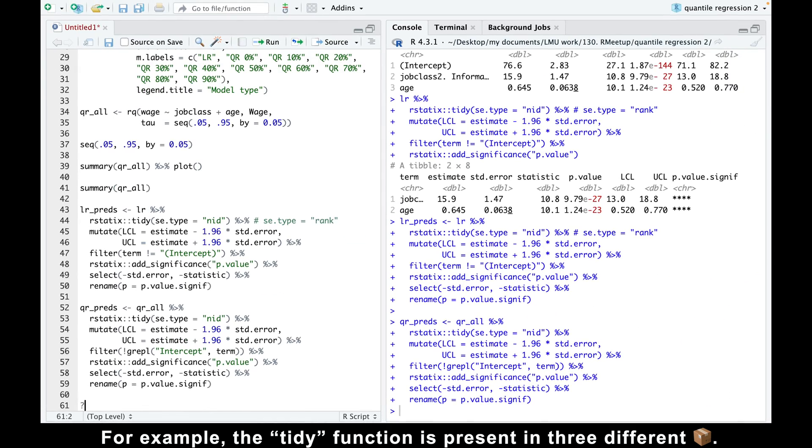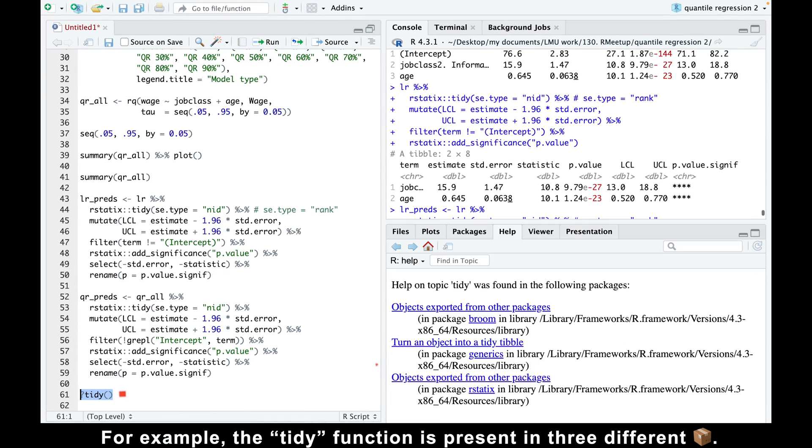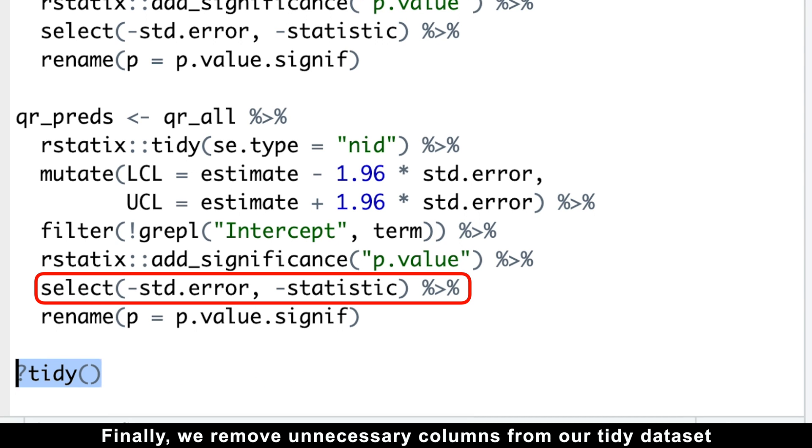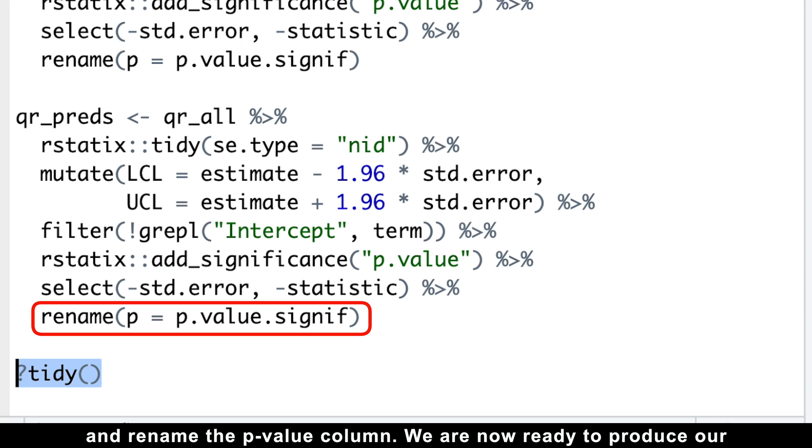For example, the tidy function is present in three different packages. But I digress, so let's get back to the topic at hand. Finally, we remove unnecessary columns from our tidy dataset and rename the p-value column.